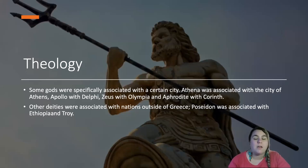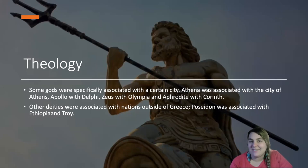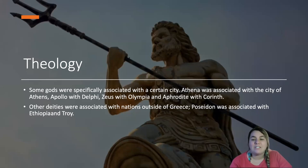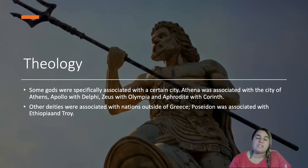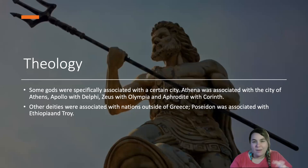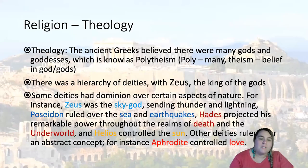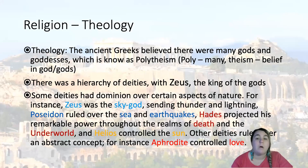The theology of the ancient Greeks: some gods were specifically associated with certain cities. Athena was associated with the city of Athens, Apollo with Delphi, Zeus with Olympia, and Aphrodite with Corinth. Other deities were associated with nations outside of Greece — Poseidon was associated with Ethiopia and Troy. There's a lot of theology and mythology that the ancient Greeks were known for.